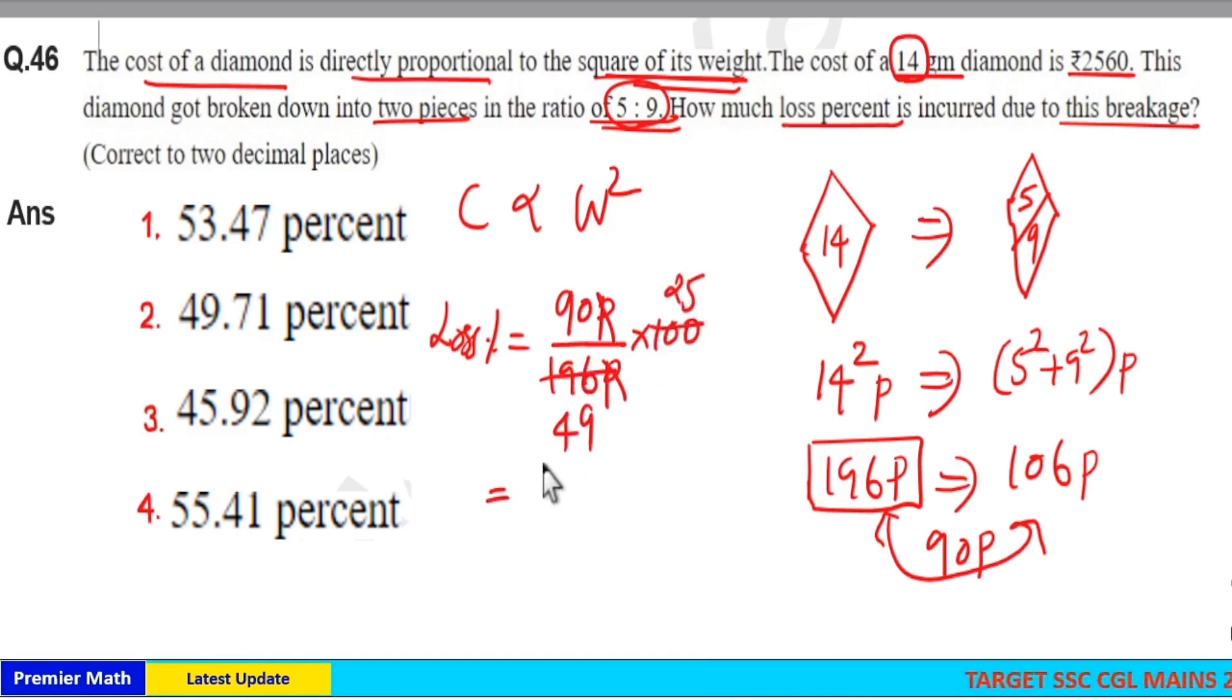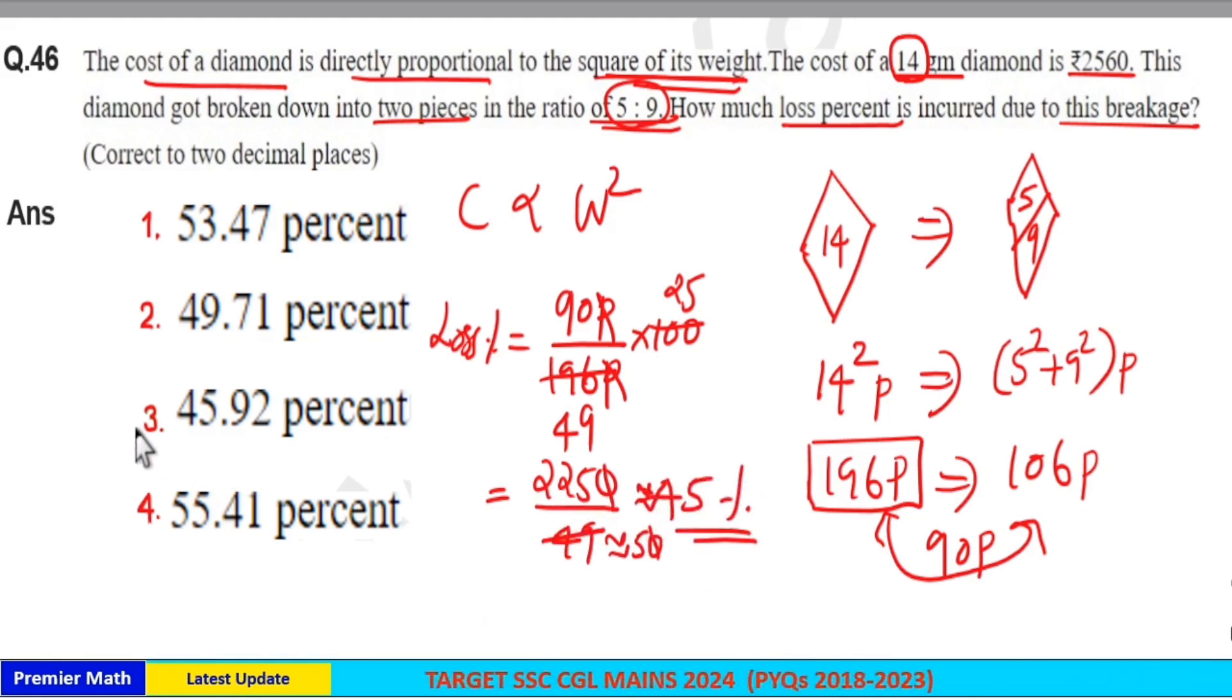25 into 9 is 225, so 2250 divided by 49. I'll consider 49 as around 50. Then 5 goes 4 times in 20, 5 times in 25. So this is around 45 percent. Option 3 is your answer.